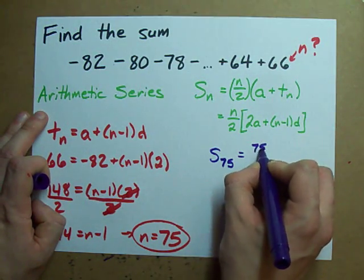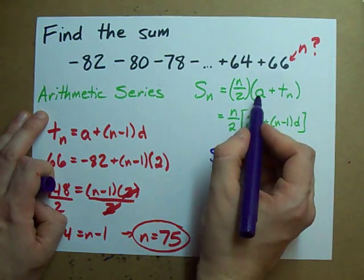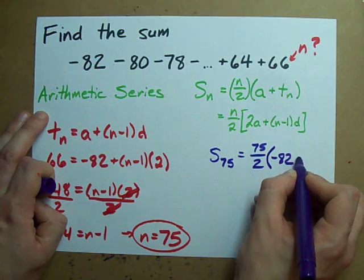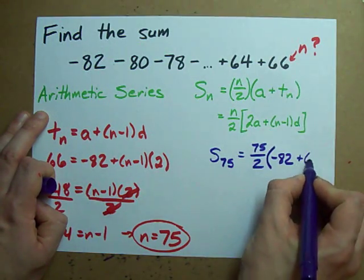It's 75 divided by 2 times the first term, negative 82, plus the final term, 66.